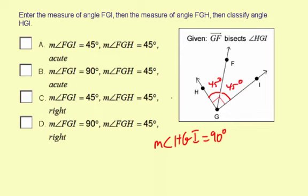Measure of angle FGI is 45 degrees, measure of angle FGH is 45 degrees, and we have a right angle for HGI.